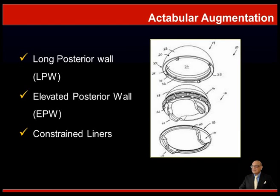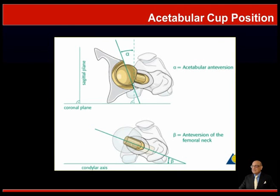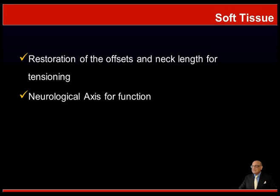Augmentation of the acetabular component is usually by a long posterior wall (LPW), an elevated posterior wall (EPW), or the use of constrained liners to prevent dislocation. Component alignment is very important: the acetabular component should not have an angle of inclination more than 45 to 50 degrees, and acetabular anteversion should be about 10 to 15 degrees. Soft tissue balancing is also critical to restore the offset and neck length for tensioning and the neurological axis for function.